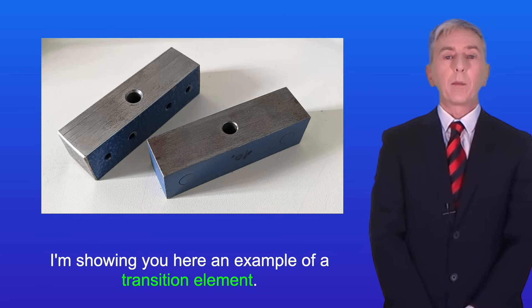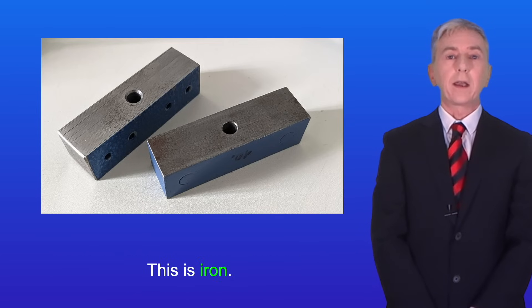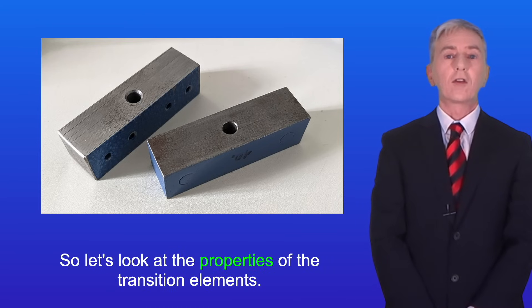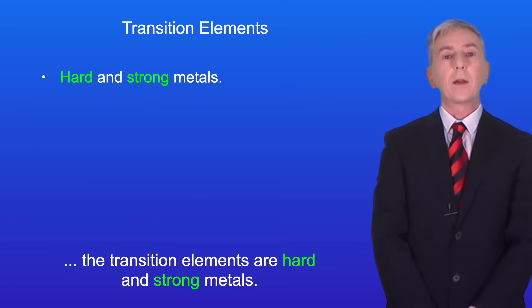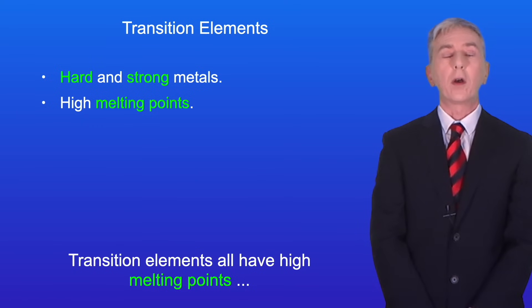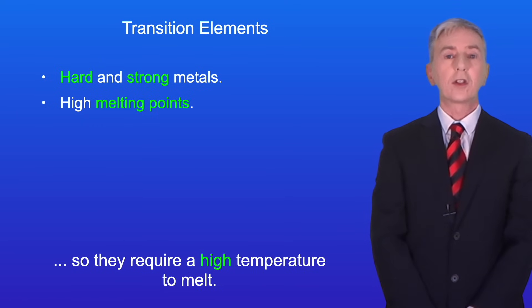I'm showing you here an example of a transition element. This is iron. So let's look at the properties of the transition elements. Unlike the alkali metals, the transition elements are hard and strong metals. Transition elements all have high melting points, so they require a high temperature to melt.